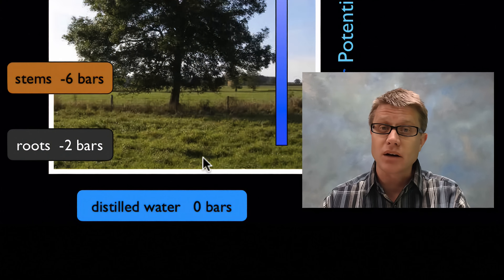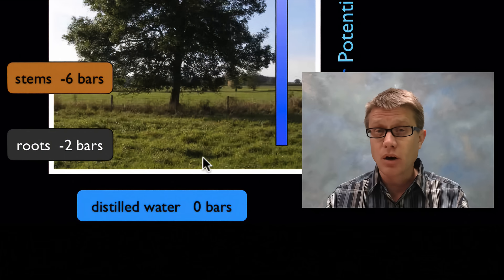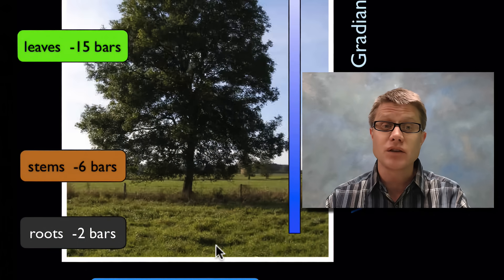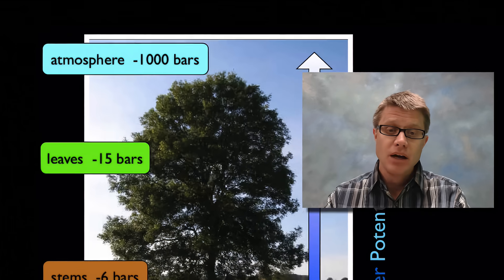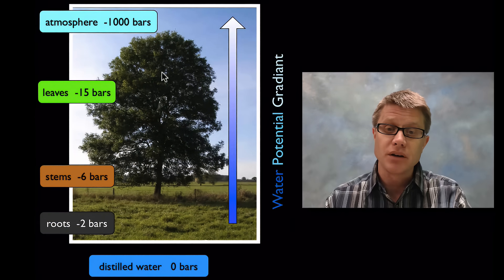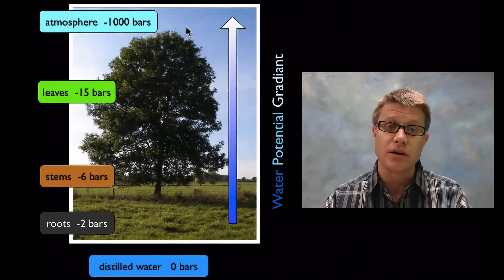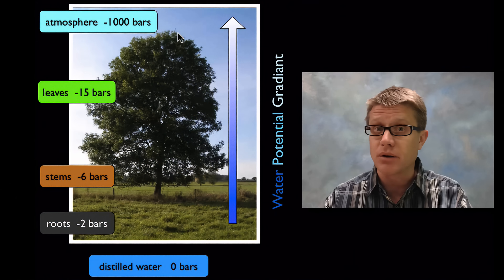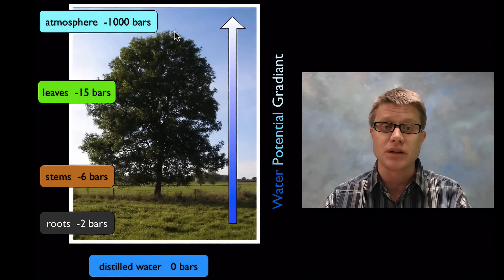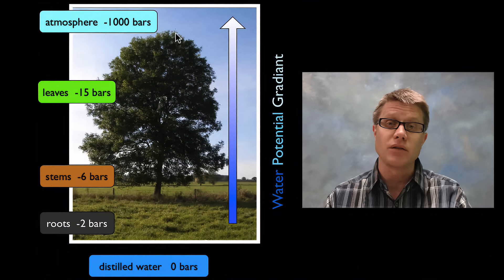But the stems are going to have even a lower water potential, and the leaves as well and even the atmosphere. So the water is moving up a tree along this water potential gradient. Now what's driving that? We're evaporating all the water up at the top, so there's not much water there at all. Really, really low water potential if we were to look at the leaves of the plant.